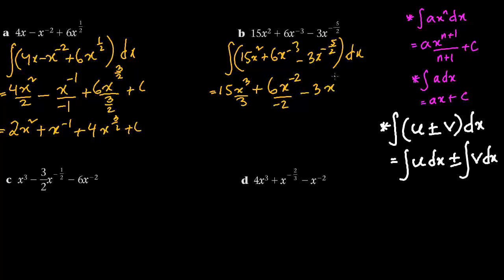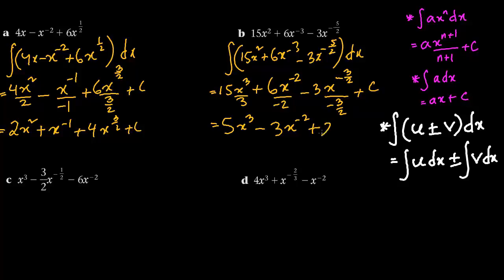For the last term: minus 3, x to the power minus 5 by 2 plus 1. Now minus 5 by 2 is 2.5, plus 1 gives minus 1.5, which is minus 3 by 2. So we divide by minus 3 by 2, plus c. Simplifying: 15 by 3 is 5x cubed; 6 divided by minus 2 is minus 3x to the power minus 2. The minus over minus 3 by 2 cancels to give plus 2x to the power minus 3 by 2, plus c.